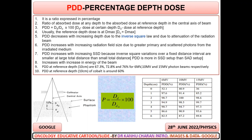PDD is formulated as DD divided by D0, multiplied by 100. DD means dose at the calculated depth, or second depth. D0 is the dose at the reference depth.